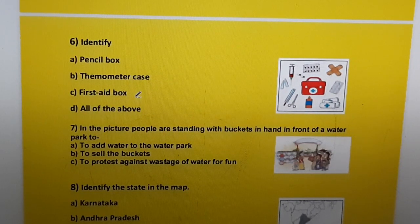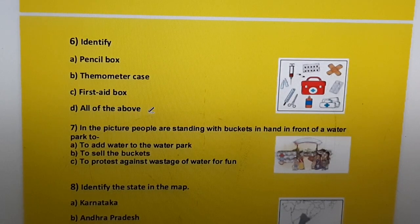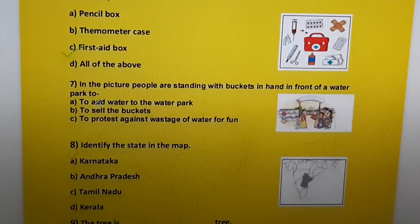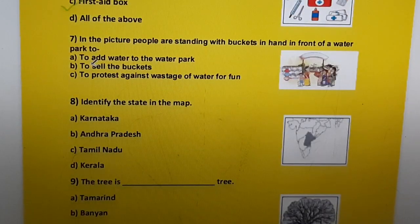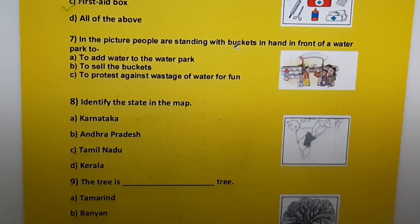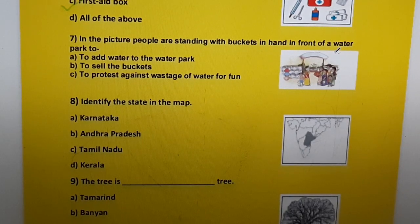Question six: Identify this picture. Options are a) pencil box, b) thermometer case, c) first aid box, d) all of the above. The correct answer is c) first aid box.